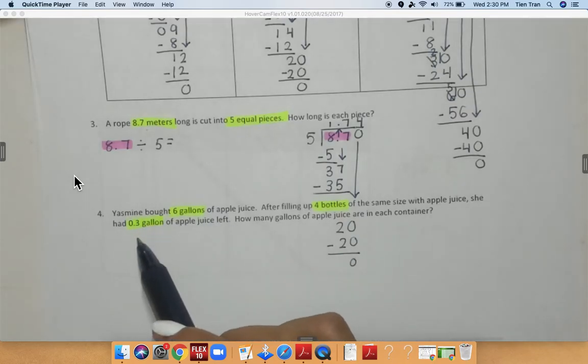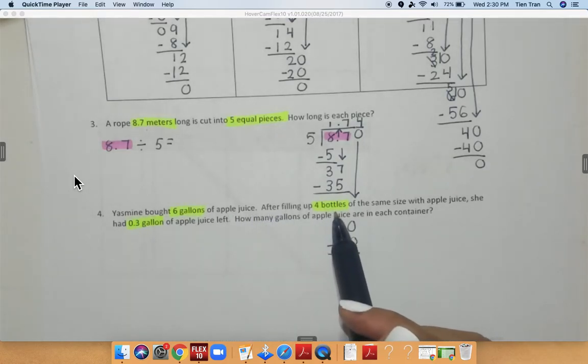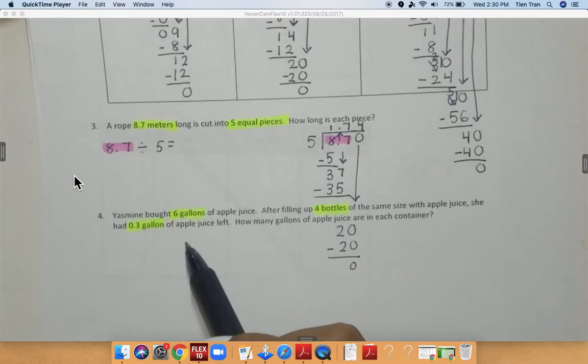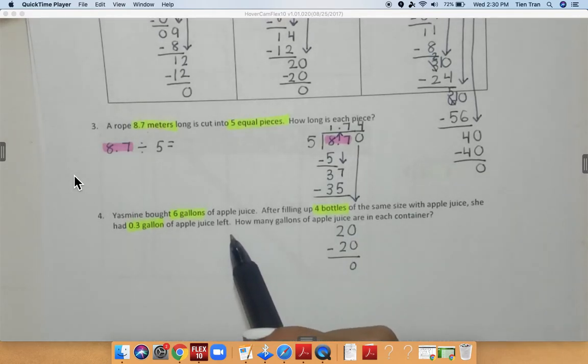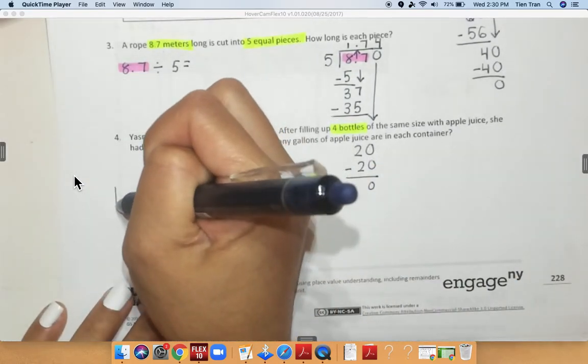So reading this again, Yasmin bought six gallons of apple juice after filling up four bottles of the same size with apple juice, she had 0.3 gallons of apple juice left. So I'm going to draw a picture so you guys can kind of see that more visually. I'm going to draw it out.